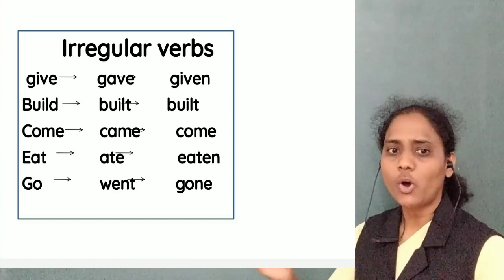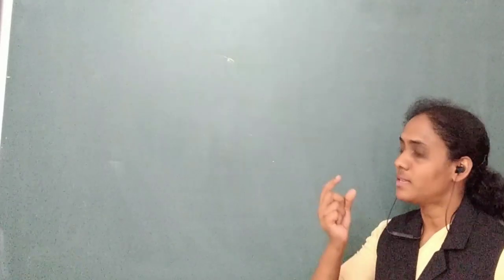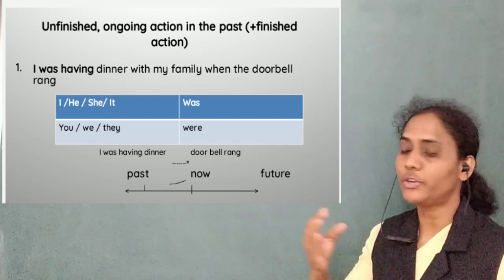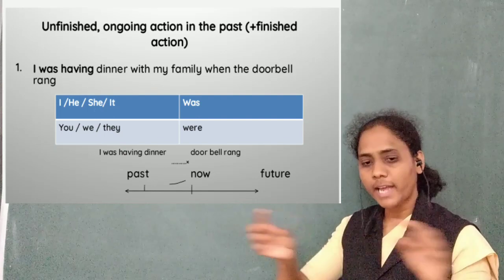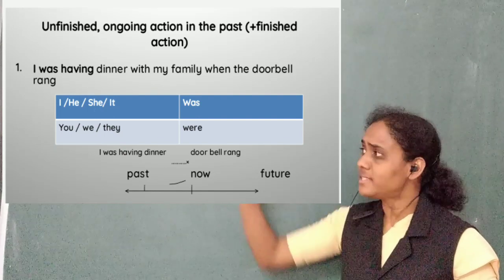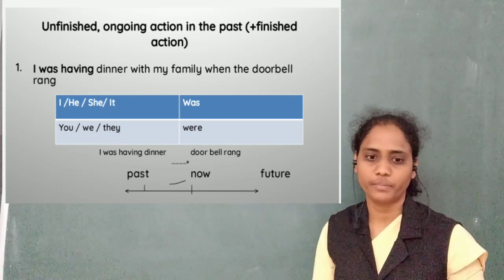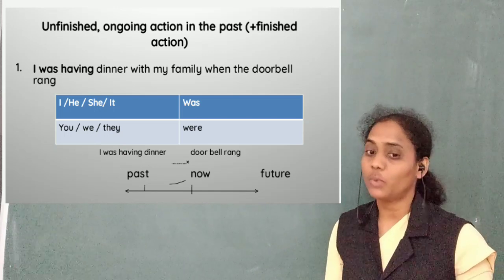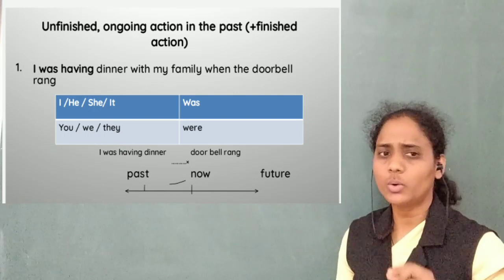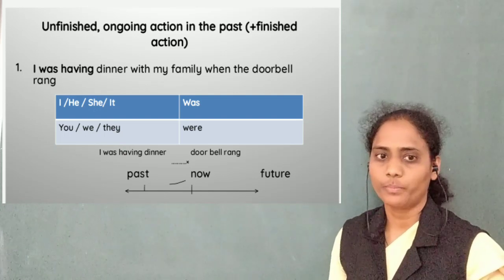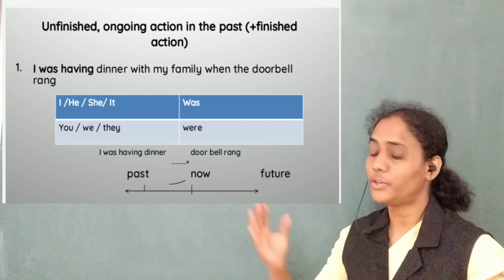Let us now move on and talk about the past continuous. Here is a sentence: I was having dinner with my family when the doorbell rang. That side is the past, in the middle is now, and all around that side is future. Our sentence is: I was having dinner with my friend — an unfinished, ongoing action in the past. I was in the middle of having dinner and something happened.